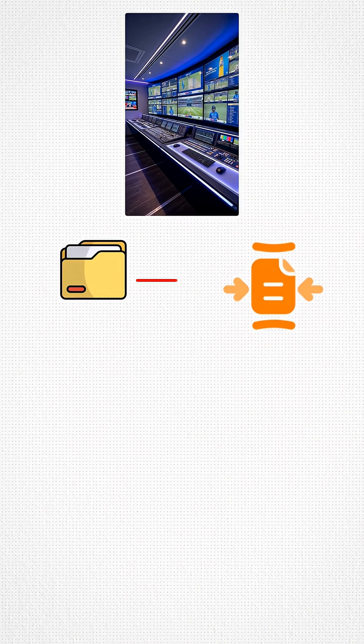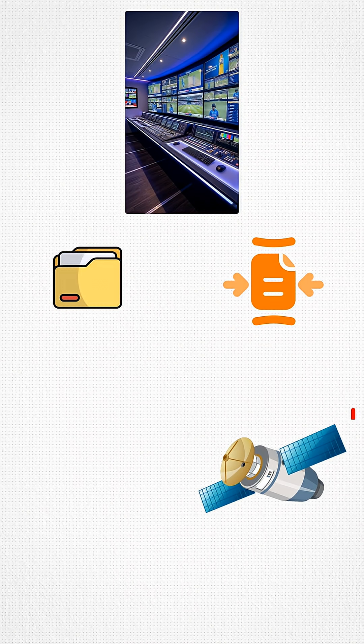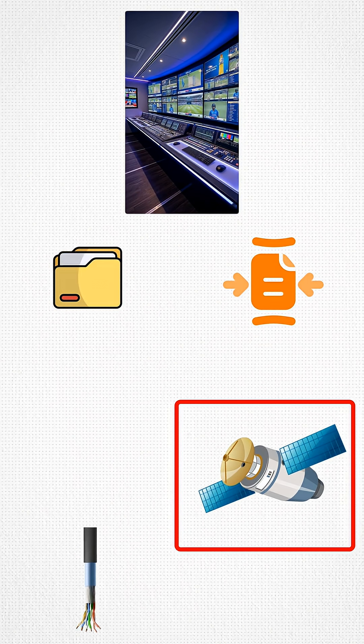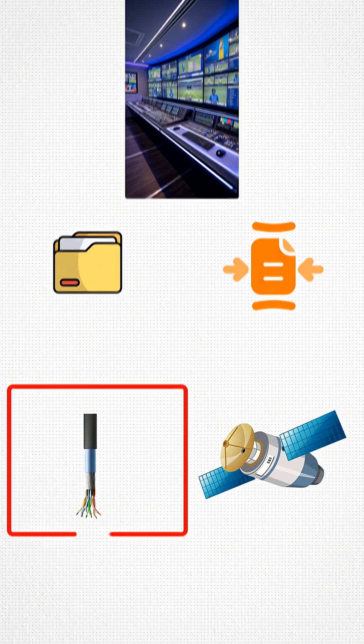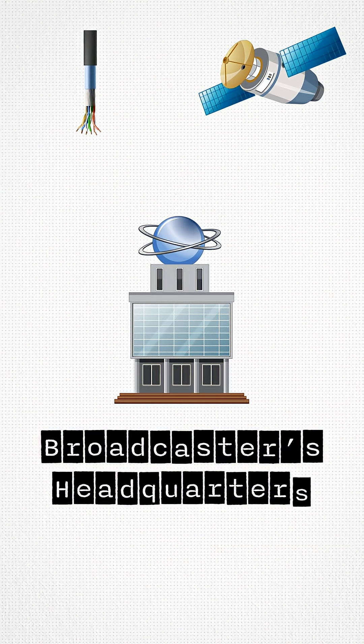And then they compress the video in under a second. From there, the feed is sent out through satellite uplinks or high-speed fiber to the broadcaster's headquarters.